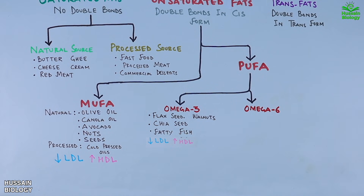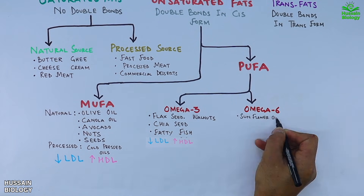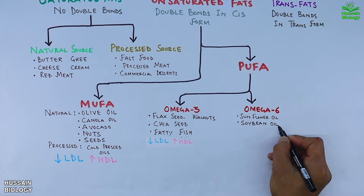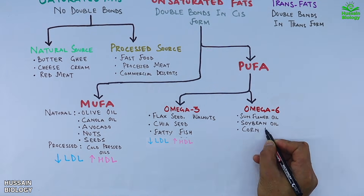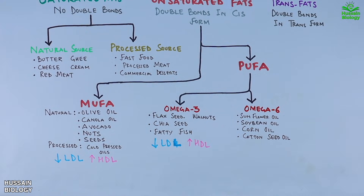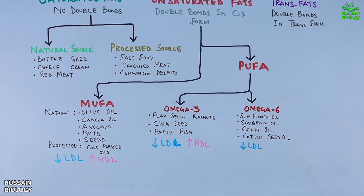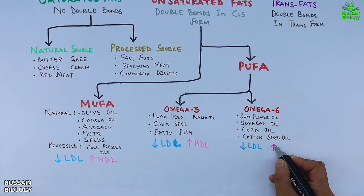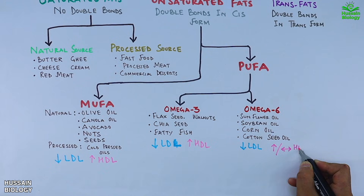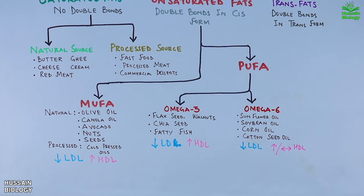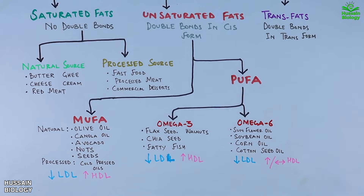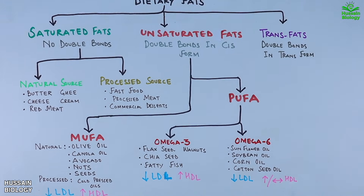Omega-6 sources are sunflower oil, soybean oil, corn oil, and cottonseed oil. They lower LDL but may have little to no effect on HDL.